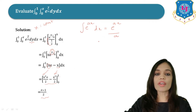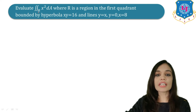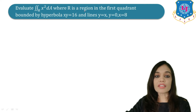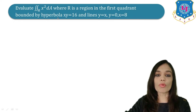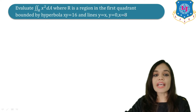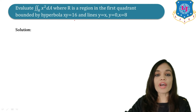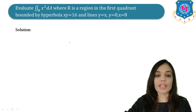Now let us solve one more example — this is a very important sum. We have to evaluate the double integral over a region R of x² dA, where R is a region in the first quadrant bounded by the hyperbola xy = 16, and the lines y = x, y = 0, and x = 8.